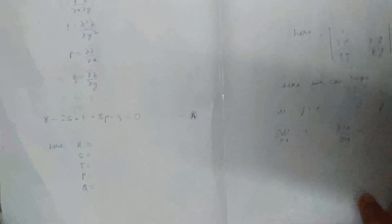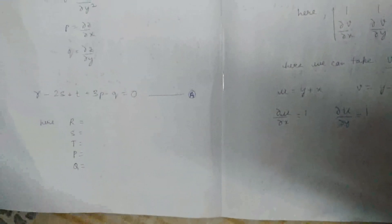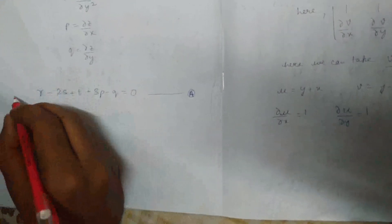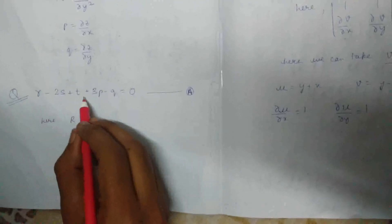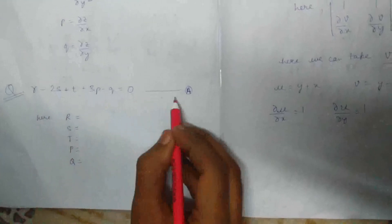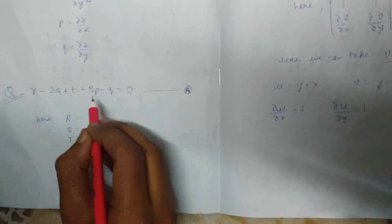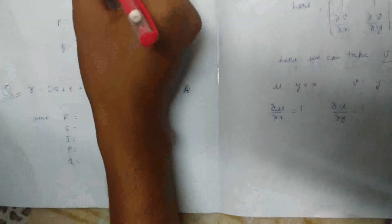Now I'm going to help you solve an example, and it's going to be very helpful for you. This is the question we're going to solve: R minus 2S plus T plus 3P minus Q equals zero, where these alphabets have the general values which I've already explained.